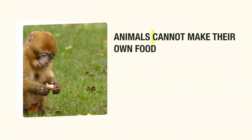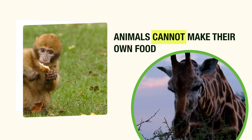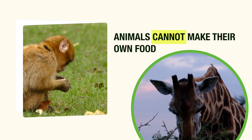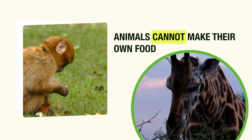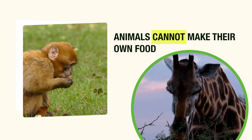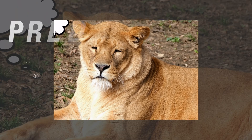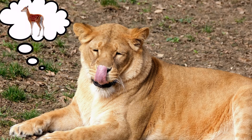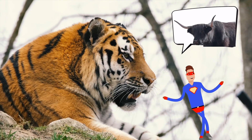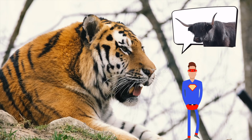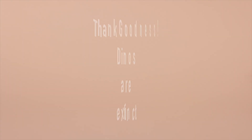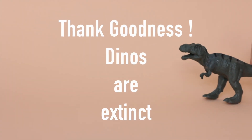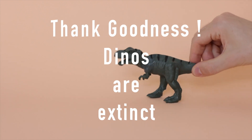However, animals including us humans cannot make our own food. If the animal depends on plants, it's a herbivore. If it depends on other animals like these predators, they are carnivores, and omnivores depend on both. This may be a good time to thank god that dinosaurs are extinct.